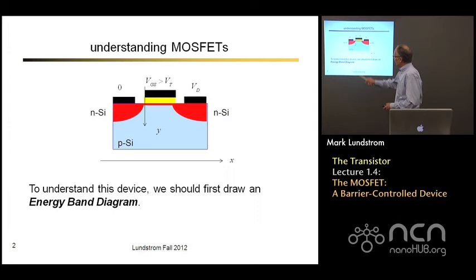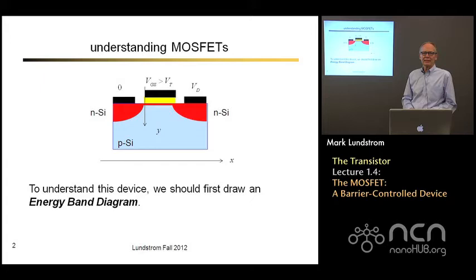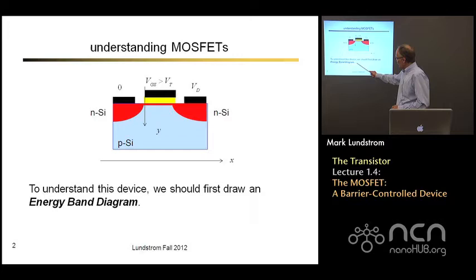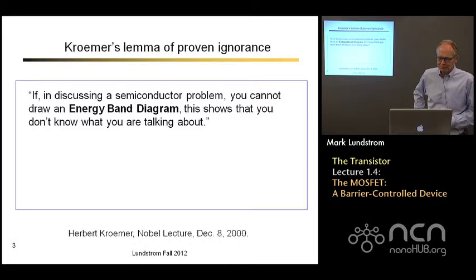Here's our cartoon sketch of a MOSFET. We've got an n-plus source of electrons, an n-type drain for electrons to go out, and we have a channel in between. We've biased the gate above threshold, so there is indeed a channel. To understand this device, we should draw an energy band diagram. So let's talk about energy band diagrams for just a second.